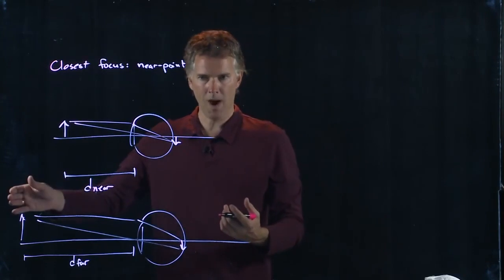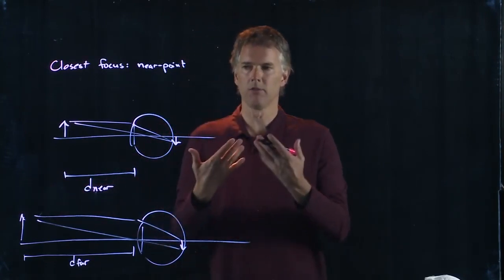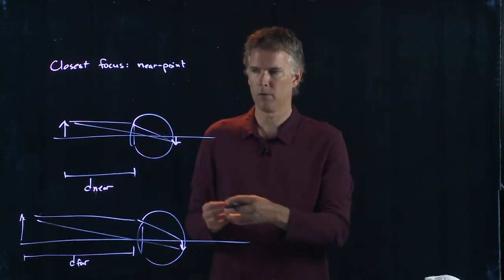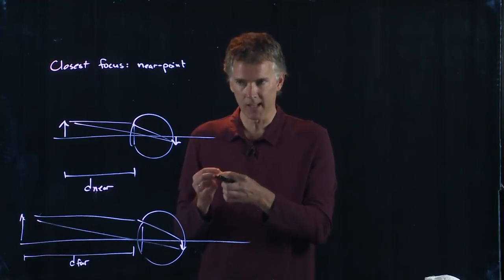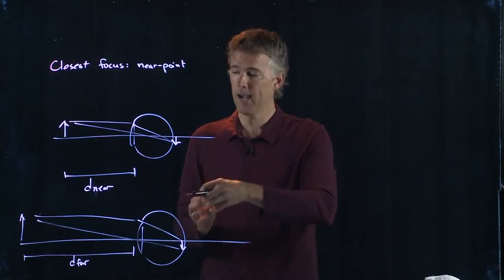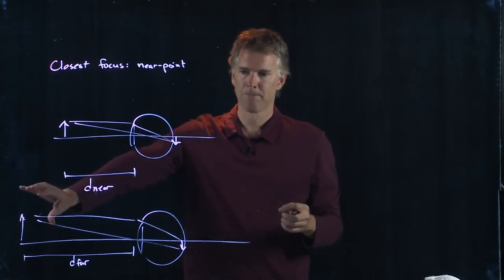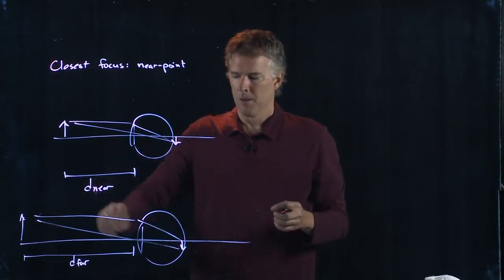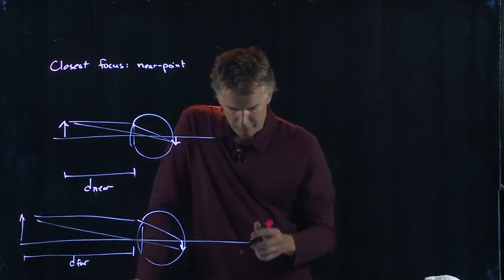Seeing things far away is when your eye is relaxed. So when you relax the muscles, the ciliary muscles that are crushing that crystalline lens, when those are relaxed, then that's your far point. So let's take a look at the first person.